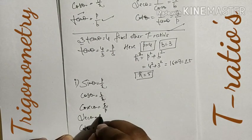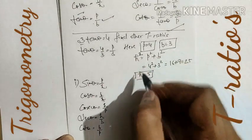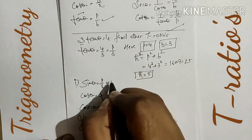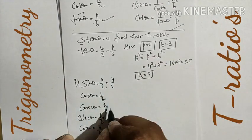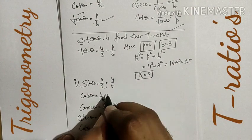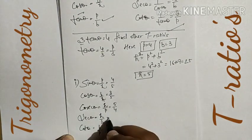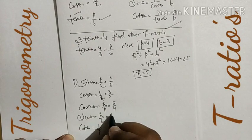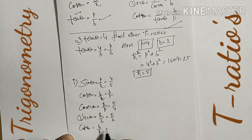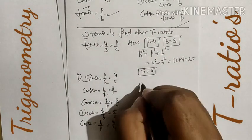Now we can calculate all the ratios. Sin θ = P/H = 4/5. Cosec θ is the reciprocal of sin, so cosec θ = 5/4. Cos θ = B/H = 3/5. Sec θ is the reciprocal of cos, so sec θ = H/B = 5/3. Cot θ is the reciprocal of tan, so cot θ = B/P = 3/4.